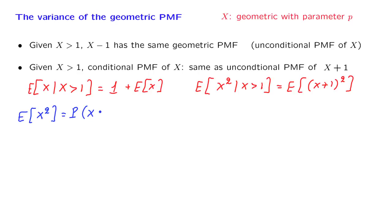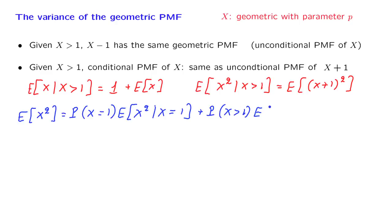We separate into two scenarios. In one scenario, x is equal to 1, and we have the expected value of x squared given that x equals 1. In the other scenario, x is bigger than 1, and we have the expected value of x squared given that x is bigger than 1. This is just the total expectation theorem.